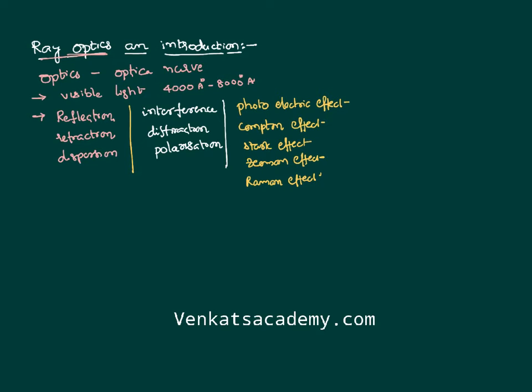To explain all these properties, we need certain concepts and theory about how light is behaving. There are different theories available. Before going to the theories, we need to understand: reflection is a phenomenon where light comes back into the same medium; refraction is the phenomenon where light goes into another medium; and dispersion is the splitting up of white light into multiple colors.